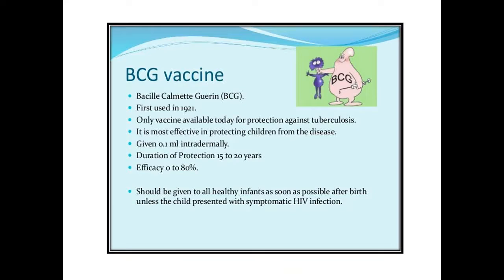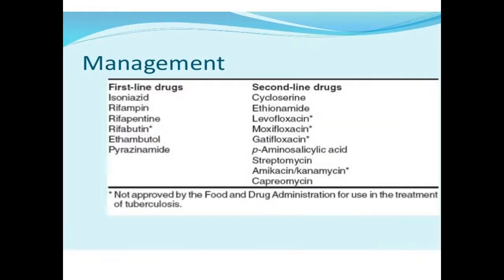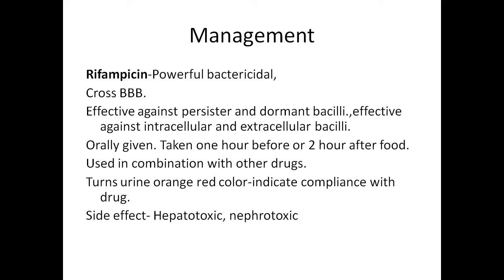Let us see the drugs used for the treatment of tuberculosis. The first line drugs are Isoniazid, Rifampicin, Rifapentine, Rifabutin, Ethambutol, Pyrazinamide, and Streptomycin. Second line drugs are Cycloserine, Ethionamide, Levofloxacin, Moxifloxacin, Gatifloxacin, Para-amino Salicylic Acid, Streptomycin, Amikacin, and Capreomycin.